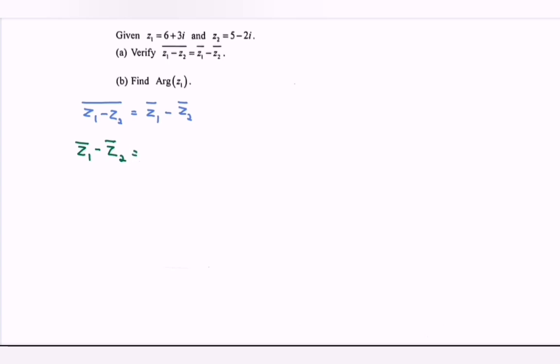So here we have 6 minus 3i minus bracket 5 plus 2i. If we simplify, we will have 1 minus 5i. So that is the conjugate of z sub 1 minus the conjugate of z sub 2.